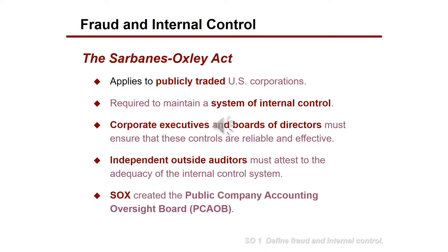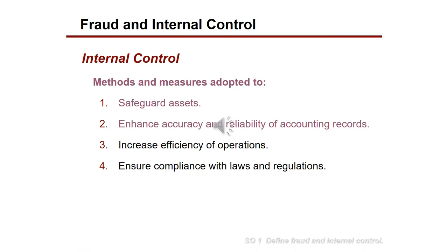The Sarbanes-Oxley Act caused the creation of the Public Company Accounting Oversight Board, PCAOB. Internal control measures have multiple purposes: first, to safeguard assets and protect them from theft; to enhance the accuracy and reliability of accounting records; to increase efficiency of operations; and to ensure compliance with laws and regulations.